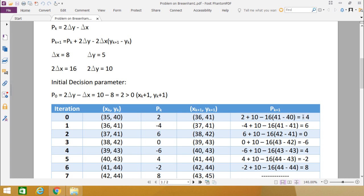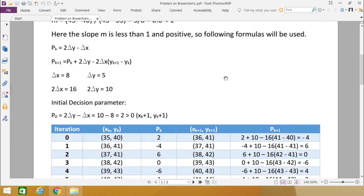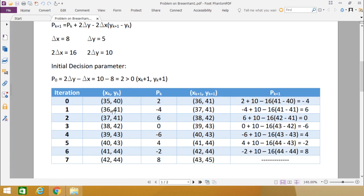Now this is our respective xk, yk. Previous xk+1, yk+1 has become xk, yk for iteration number 1. Here we are finding this one that is minus 4, so pk is less than 0, so it will be xk+1 and yk. That is why we have gone for 36+1 = 37, but the 41 remains unchanged.